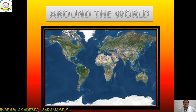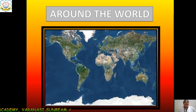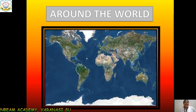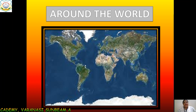Our first topic is Around the World. Now children, you can see this is the picture of a world map. The things you are seeing in white and green are continents. These continents are surrounded by blue color, and these blue colors are oceans. So all around is oceans and in between are continents.